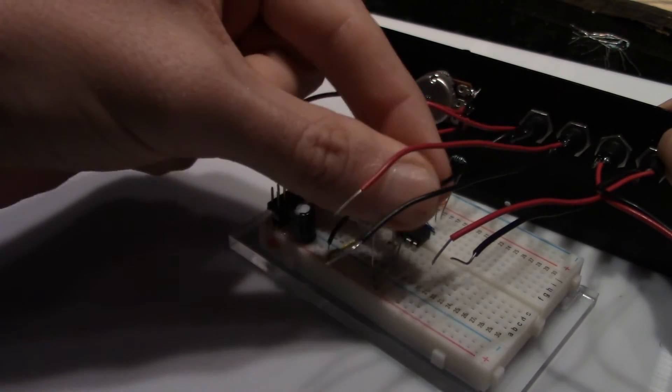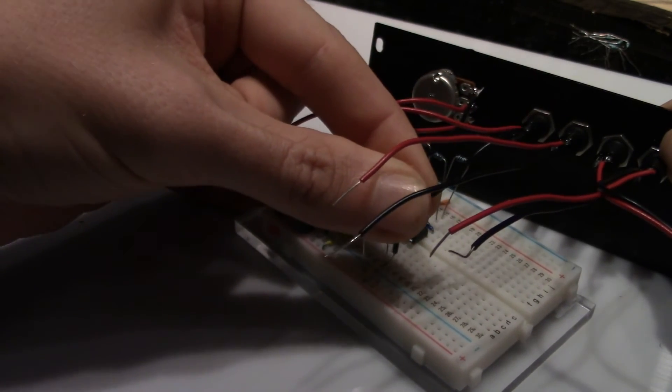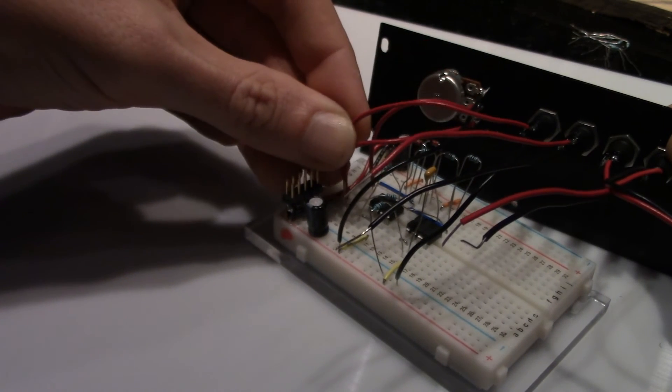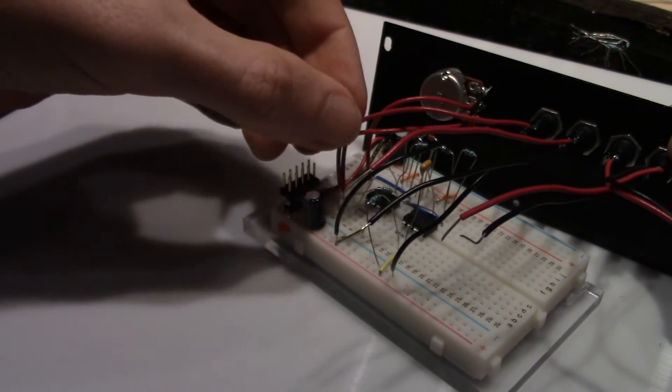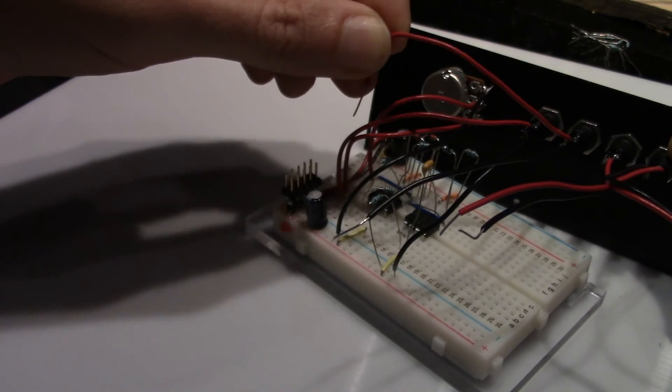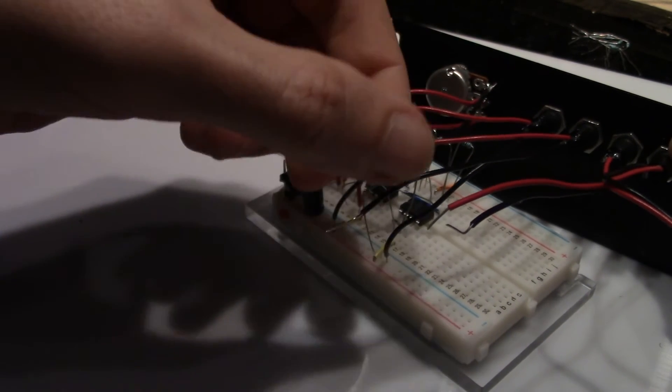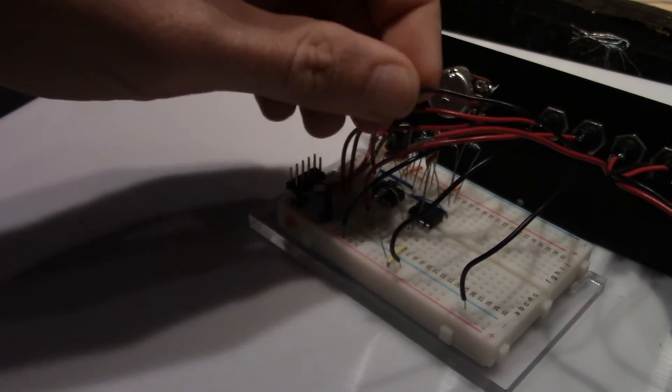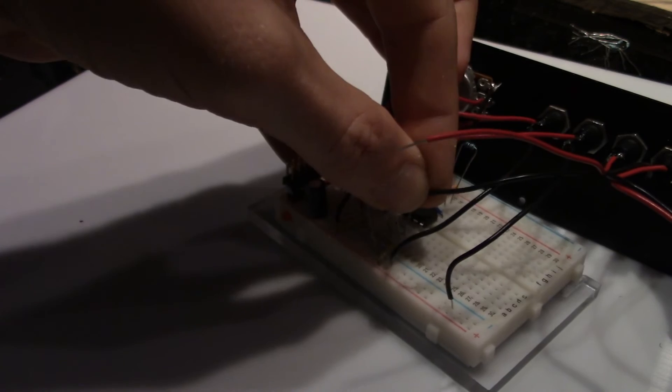Then connect the black wire of the first jack to ground and the red wire to the potentiometer wire on the open bus. Connect the second jack to ground and pin three of the first chip. Connect the third jack to ground and pin one on the second chip.